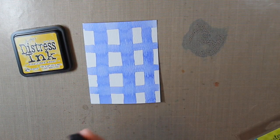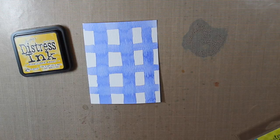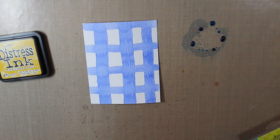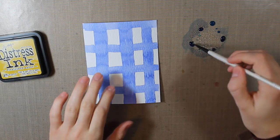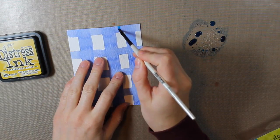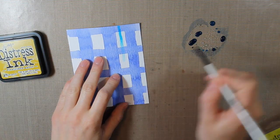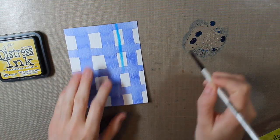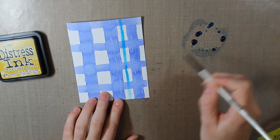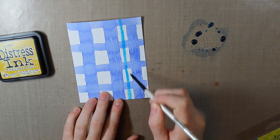So my next color I'm using is the Mermaid Lagoon and I'm going to do the same thing. Put a little bit on my nonstick craft sheet and then squirt it with my water. And then I have a smaller paintbrush that I'm using and I'm going to create really teeny stripes down the side. And I'm going over the part that has a little bit of white left in there. And the blueprint sketch color is completely dried at this point.